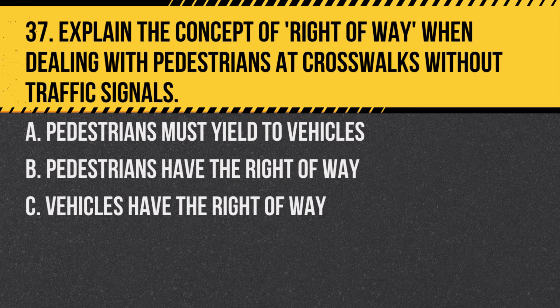Question 37. Explain the concept of right-of-way when dealing with pedestrians at crosswalks without traffic signals. A. Pedestrians must yield to vehicles. B. Pedestrians have the right-of-way. C. Vehicles have the right-of-way. Answer: B. Pedestrians have the right-of-way. Drivers must yield to pedestrians at all crosswalks.